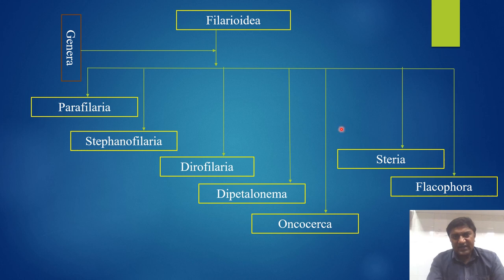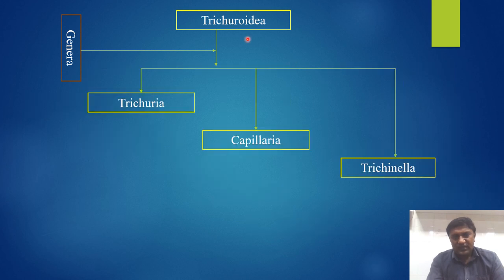Filarioidea have the following genera: Parafilaria, Stephanofilaria, Dirofilaria, Dipetalonema, Onchocerca, Setaria, and Elaeophora. The Trichuroidea have the following genera: Trichuris, Capillaria, and Trichinella.